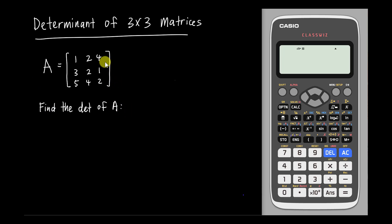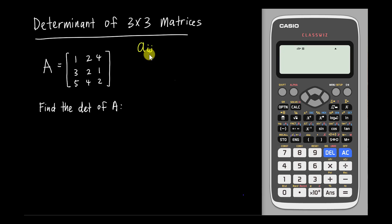Before we start, you need to know that each element has its own position name. The position name is something like A_ij, where I is the row number and J is the column number.